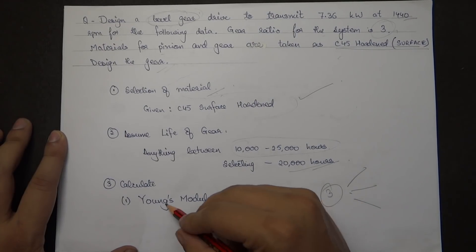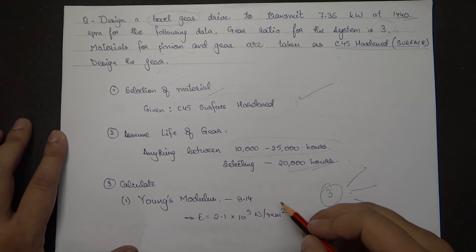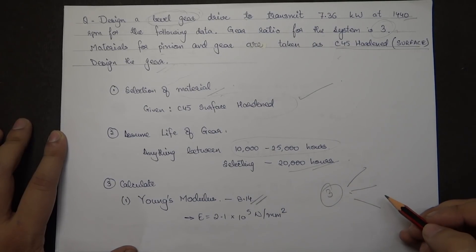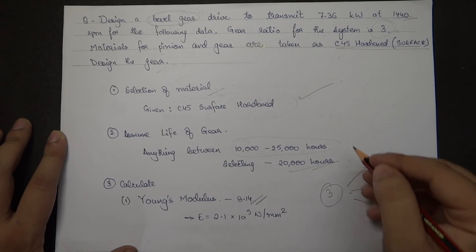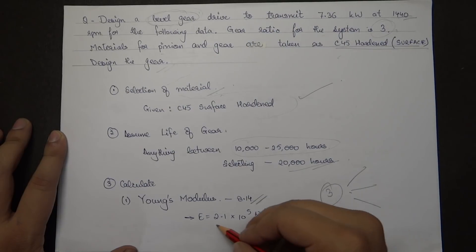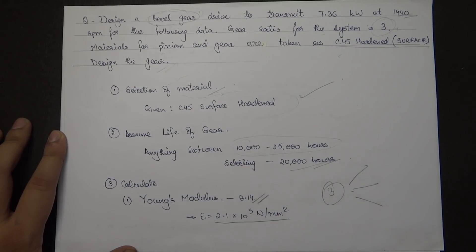The third step contains three parts. The first is calculation of Young's modulus. From page 8.14, the material is steel, therefore E is equal to 2.1 × 10⁵ Newton per mm square.